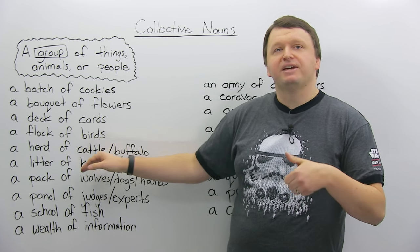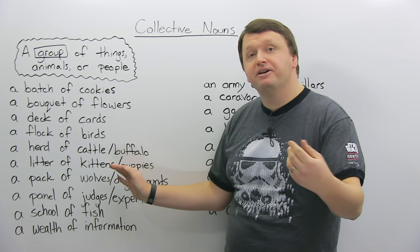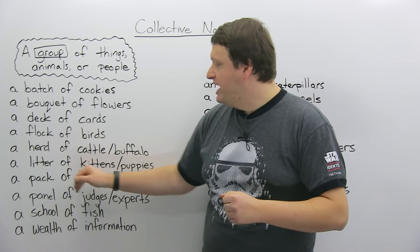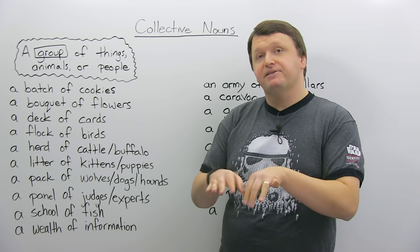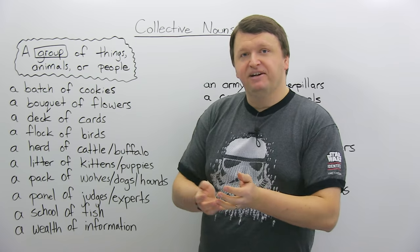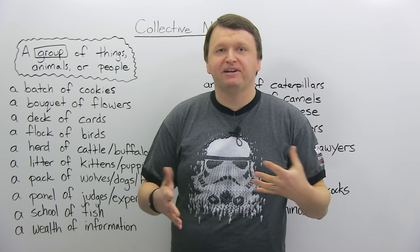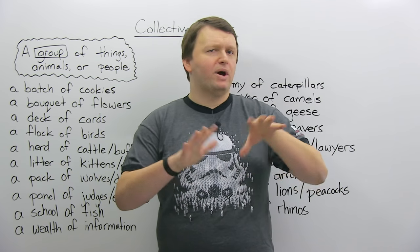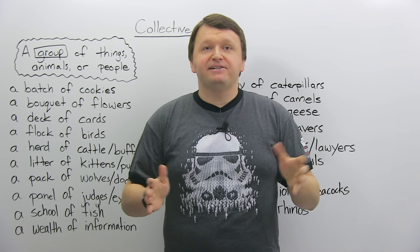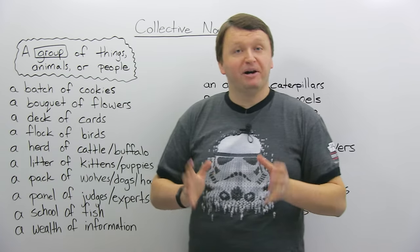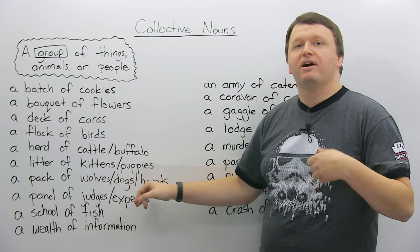Next, for cows and buffalo, you can say a herd, a herd of cattle, a herd of buffalo. If you have kittens, baby cats, baby dogs, you say a litter of kittens, a litter of puppies. So, for example, in the movie 101 Dalmatians, a famous Disney movie where there are 101 baby puppies, baby Dalmatians, that is a litter of 101 puppies.